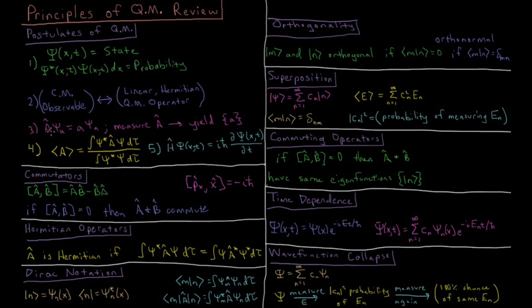The third postulate states that if we have a wave function and we try to measure a certain property, like position or momentum, we will only get eigenvalues of that particular operator. So if we try to measure momentum, we will only get momentum eigenvalues — not expectation values or average values, but only the specific eigenvalues.